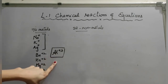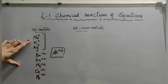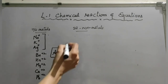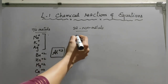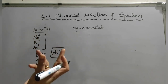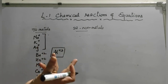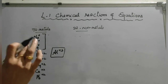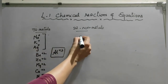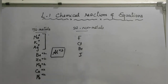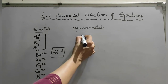So sodium, potassium, silver show plus one; barium, zinc, magnesium, calcium, lead show plus two; and aluminum shows plus three. Now for non-metals: non-metals show minus one ionic state if they accept one electron, minus two if they accept two electrons, and minus three if they accept three electrons.